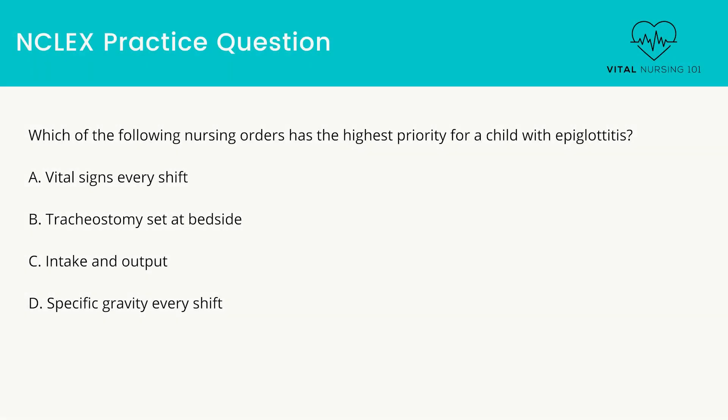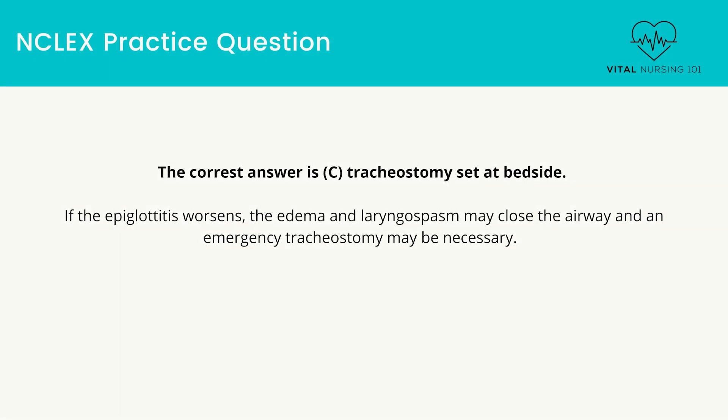Which of the following nursing orders has the highest priority for a child with epiglottitis? Vital signs every shift. Tracheostomy set at bedside. Intake and output. Specific gravity every shift. The correct answer is tracheostomy set at bedside. If the epiglottitis worsens, the edema and laryngospasm may close the airway and an emergency tracheostomy may be necessary.